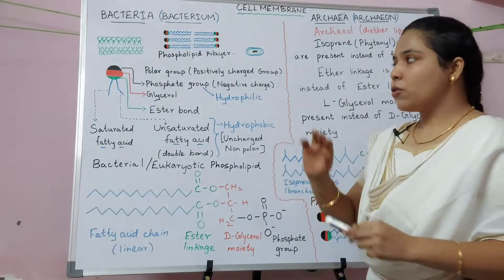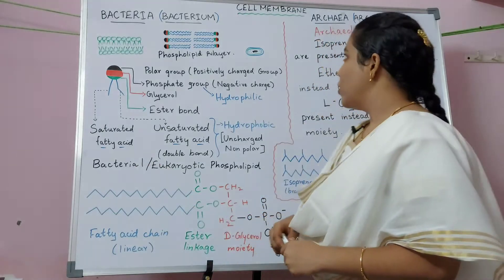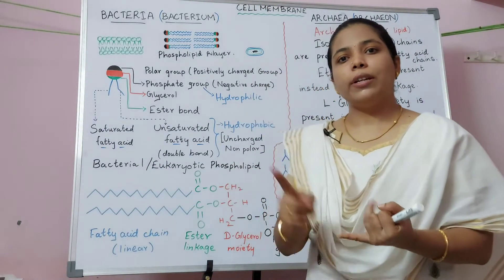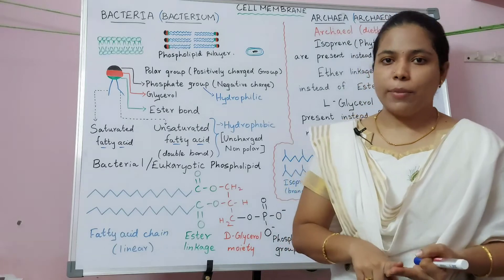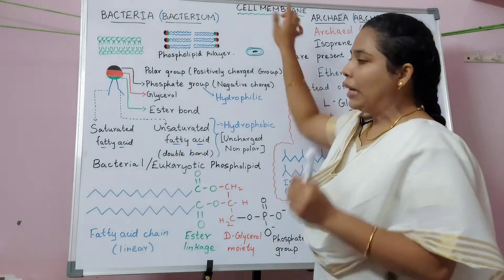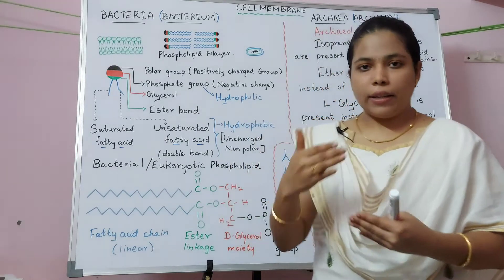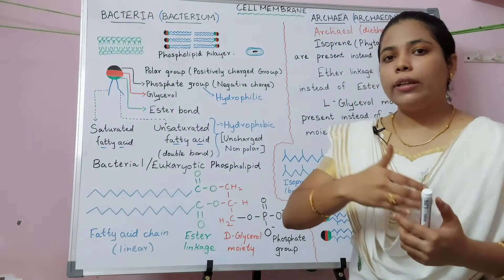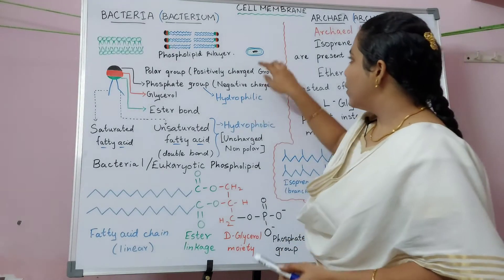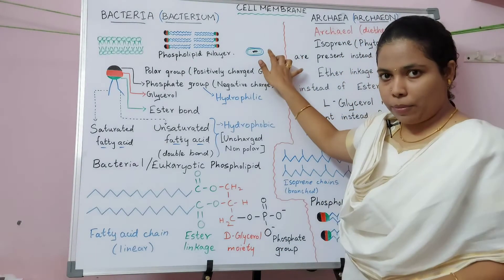Good morning everyone. We will start with the bacterial cell membrane. The cell membrane is also known as the plasma membrane, cytoplasmic membrane, or plasmalemma. This cell membrane is a layer that covers the bacterial cell and encloses all the contents present inside a bacteria. This green color line in the diagram indicates the plasma membrane.